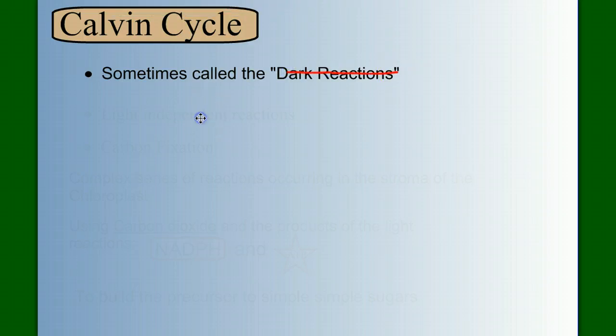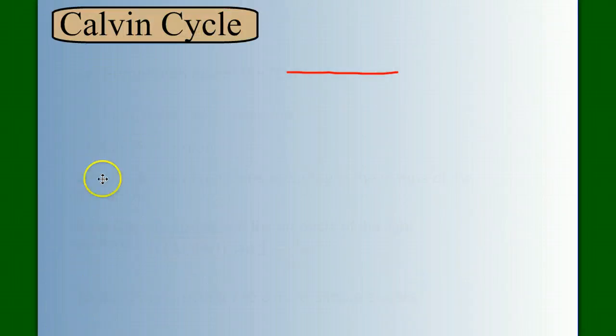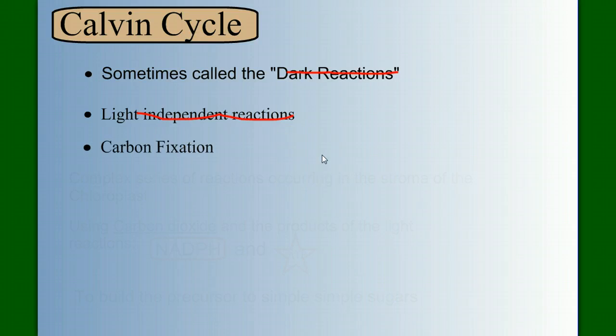Other people will call the Calvin cycle the light independent reactions. And I think that's a little bit of a mistake also because the Calvin cycle is dependent upon the products of the light reactions. So I'm not sure I like that way of talking about it. I'll just call it the Calvin cycle. But one thing we can say is that it is carbon fixation. And by carbon fixation, we mean taking carbon dioxide out of the atmosphere and putting it into a usable form.